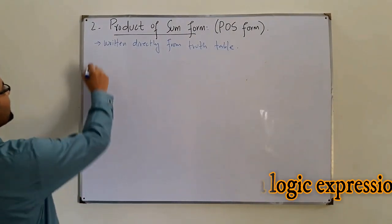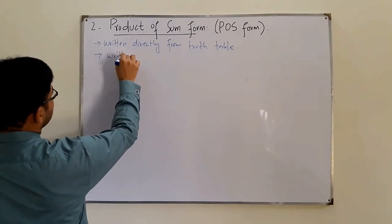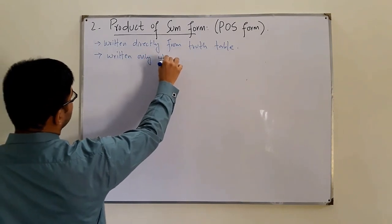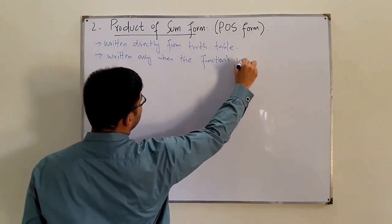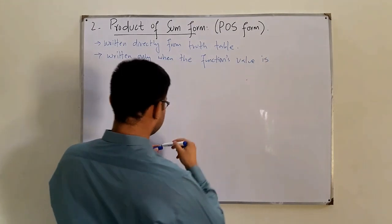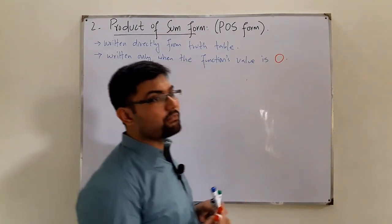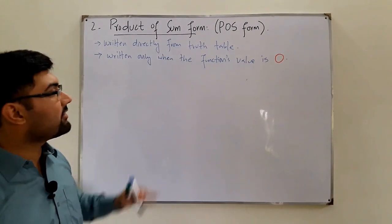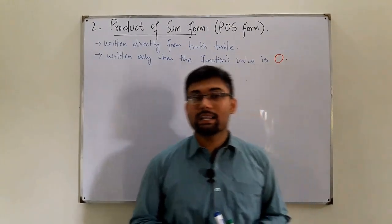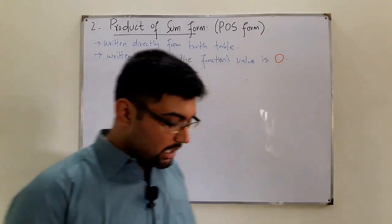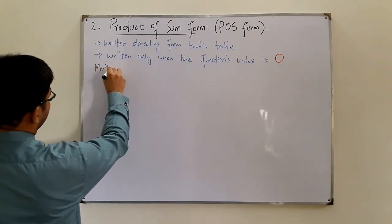But there is a difference. The second point is it's written only when the function's value is zero. So in the SOP form we write it when the function's value is one, but in the POS form we write it when the function's value is zero.